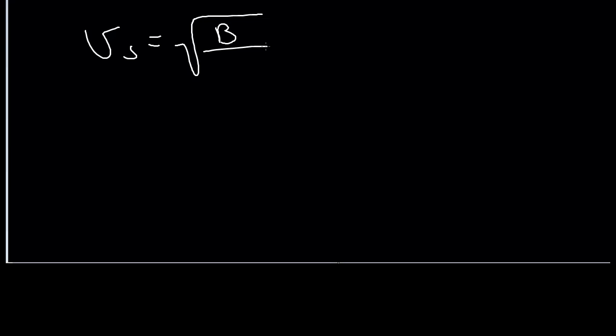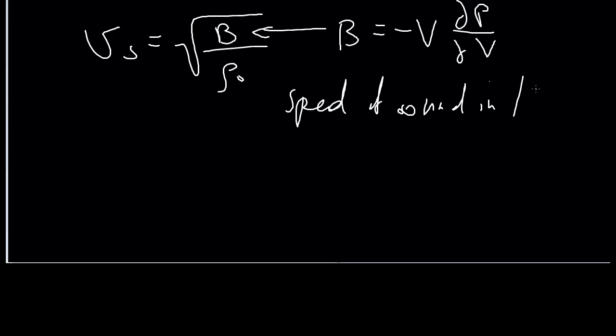And we define this bulk modulus here, which is defined to be the negative volume dP/dV. And that is something we can actually look up for different conditions and different liquids. And this is the speed of sound in liquid.